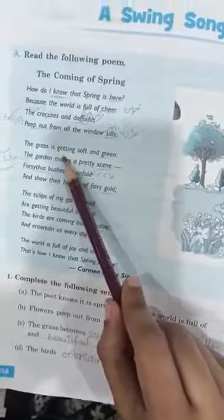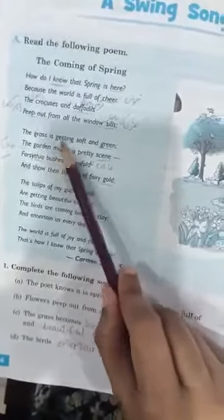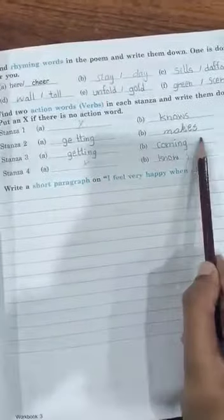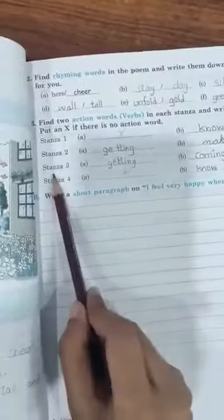The second stanza is about the grass getting green, so 'getting' is the verb and 'makes' is also a verb. There are two verbs in the second stanza. We will write in the blanks 'getting' and 'makes' in front of stanza number two.